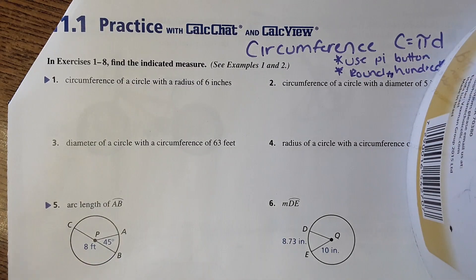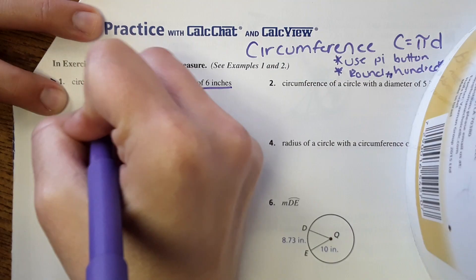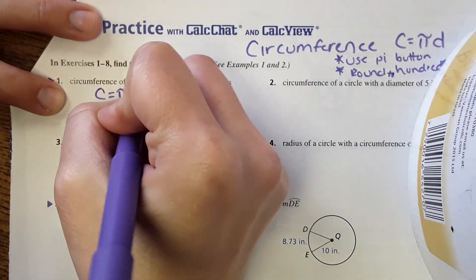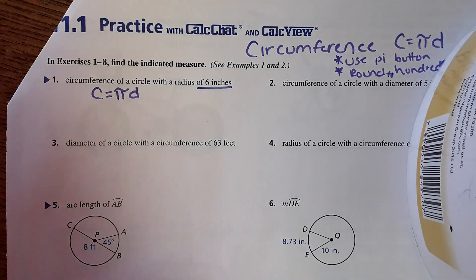So number one, circumference of a circle with a radius of six inches. The equation for circumference is circumference equals pi times diameter. What's nice is this equation is on the reference sheet, so you don't necessarily have to memorize it but you need to know where to find it on here.